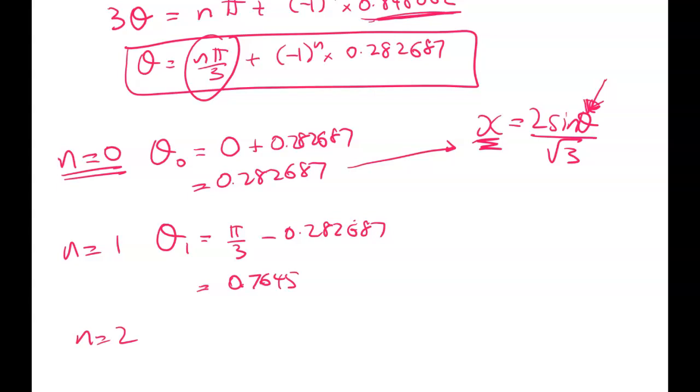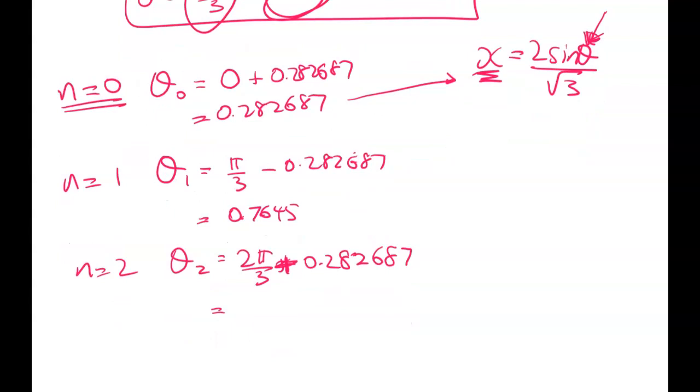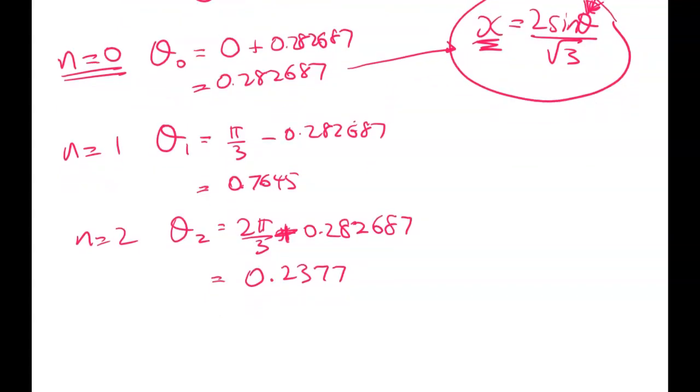Now I'm going to get n equals 2 and I get theta 2 is equal to 2 pi on 3 plus because that's an even power plus 0.282687. So I get to here and that gets me 0.2377. And I kind of go yay I've got three values let's chuck them into x. And you'll see that something is going to go wrong. And in the examiner's report it said that overall students found this question really hard but they especially mucked up this very last little bit here.